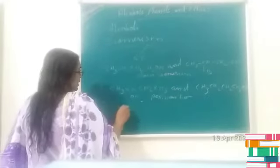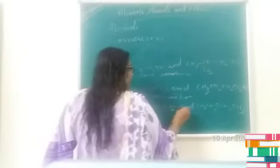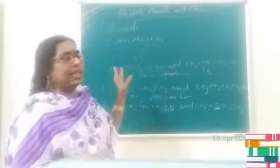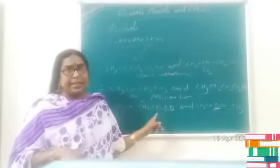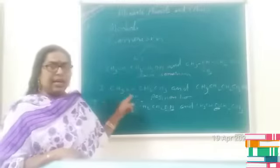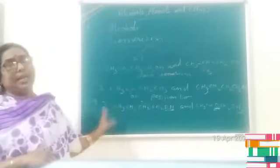The third type: consider butane-1-ol (CH₃CH₂CH₂CH₂OH) and ethoxyethane (CH₃CH₂OCH₂CH₃). Both share the same molecular formula but differ in their functional group — one is an alcohol and the other is an ether. This is termed functional isomerism. Alcohols and ethers are functional isomers of each other. So alcohols show three types of structural isomerism: chain isomerism, position isomerism, and functional isomerism.